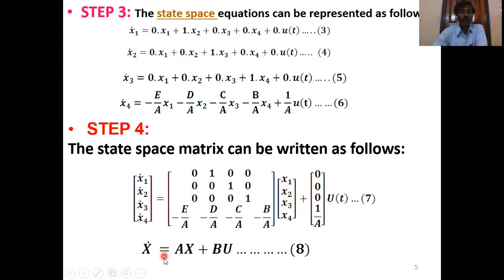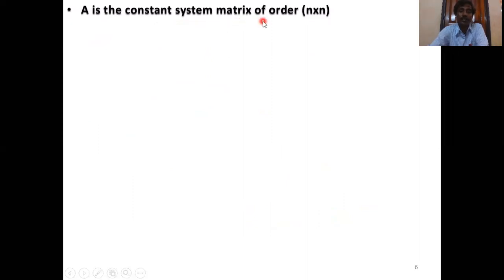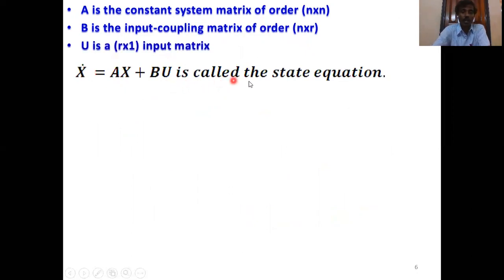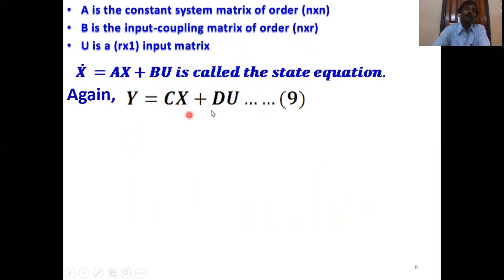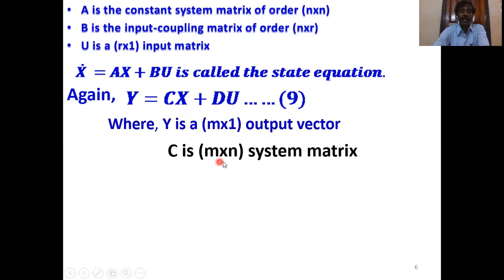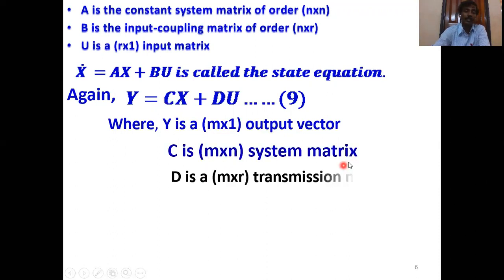This is the state matrix, equivalent to X-dot = AX + BU, where X-dot equals this, A equals this matrix, X equals [X1, X2, X3, X4] matrix, B equals [0, 0, 0, 1/A], and U equals U(t). A is the constant system matrix of order n×n and B is the input coupling matrix of order n×r. U is the n×r input matrix. Again, Y = CX + DU is the output equation, where Y is an m×1 output vector, C is m×n system matrix, and D is m×r transmission matrix.